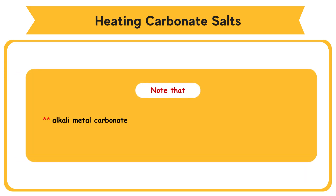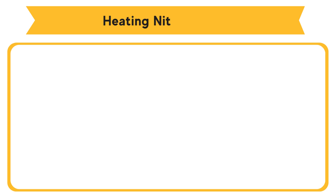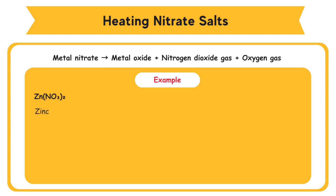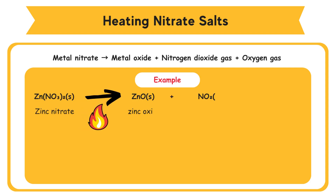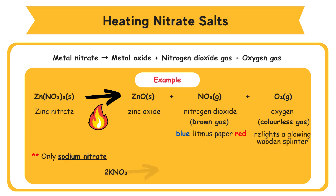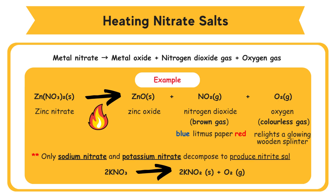Note that alkali metal carbonates, such as sodium carbonate and potassium carbonate, do not decompose on heating. Heating nitrate salts: Most metal nitrates decompose to produce metal oxide, nitrogen dioxide gas, and oxygen gas. Metal nitrate → metal oxide + nitrogen dioxide gas + oxygen gas. Example: Zinc nitrate decomposes on heating to produce zinc oxide, nitrogen dioxide gas, and oxygen gas. Nitrogen dioxide is a brown gas that turns moist blue litmus paper red. Oxygen is a colorless gas that relights a glowing wooden splinter. Only sodium nitrate and potassium nitrate decompose to produce nitrite salts and oxygen.